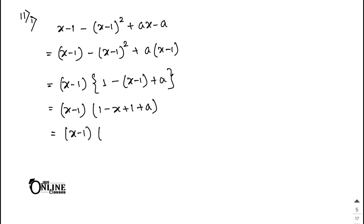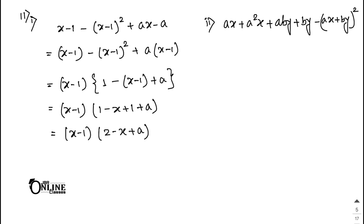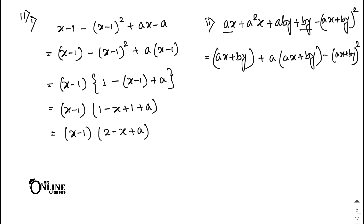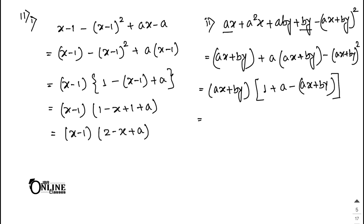Sum 11.2: ax + a²x + ay + by - (ax + by)². Group (ax + ay) and (a²x + by) — actually group (ax + by) from the first and third terms giving (ax + by), then common a from the middle two gives a(ax + by), and the last term is minus(ax + by)². So (ax + by) is the common factor, giving (ax + by)(1 + a - (ax + by)) = (ax + by)(1 + a - ax - by).